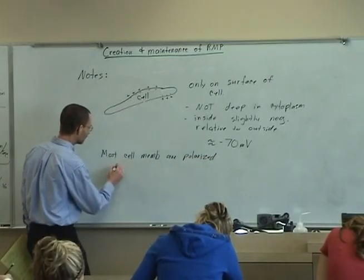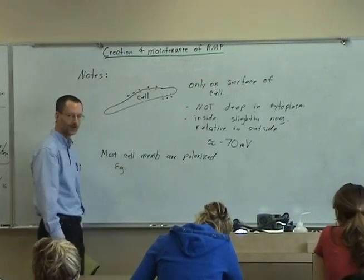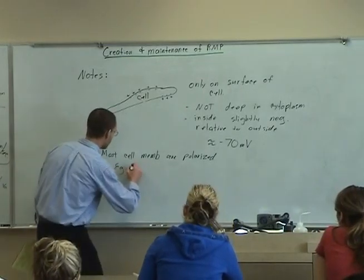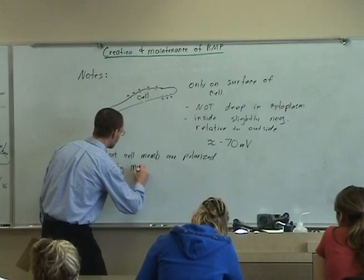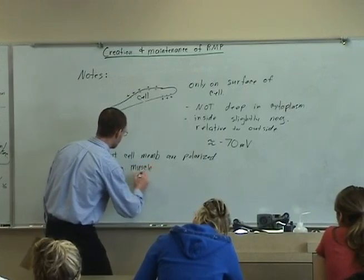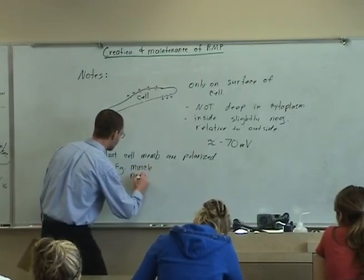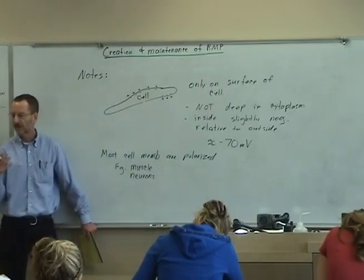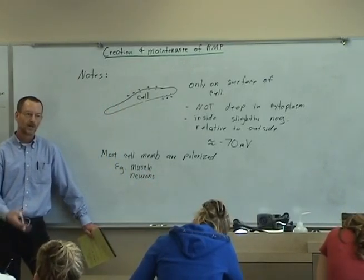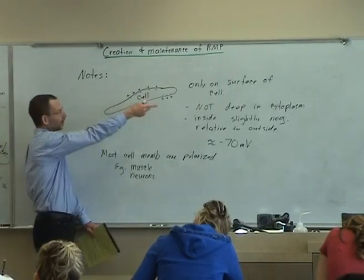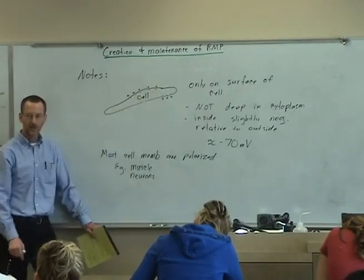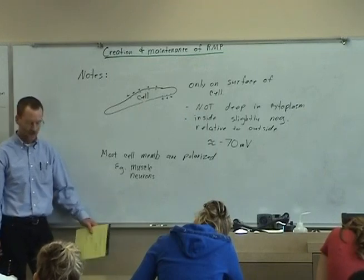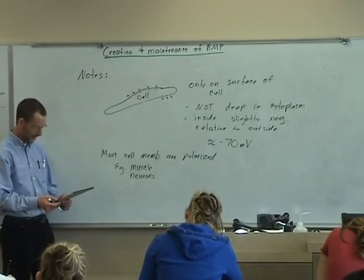In particular, those that we're going to be spending a fair amount of time looking at are muscle cells and neurons. They're both said to be excitable tissue. And we're going to excite them by altering that resting membrane potential, causing it to change polarity.